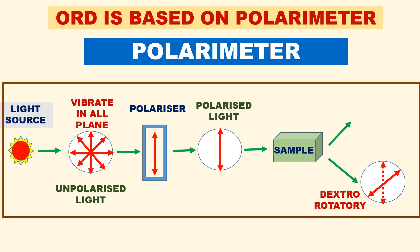If your organic compound is an L-isomer — levorotatory — then it will rotate the plane-polarized light to the left, that is, anticlockwise direction.